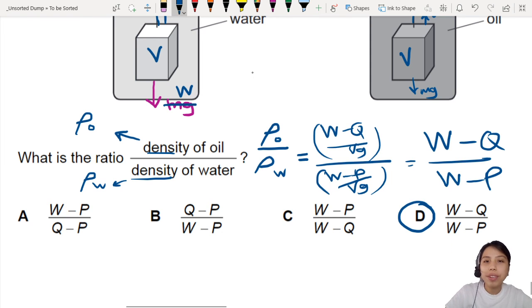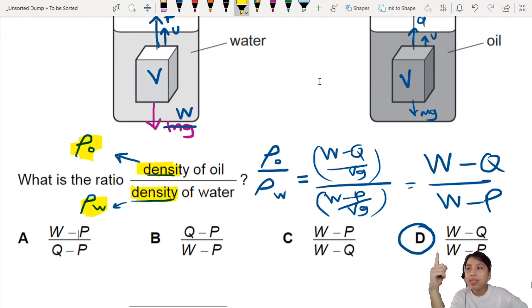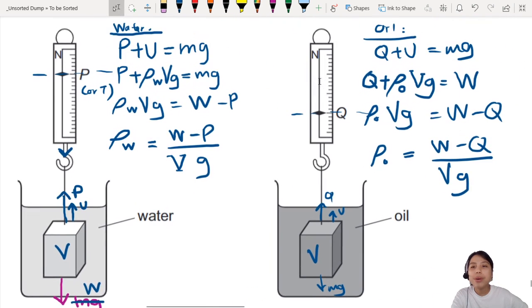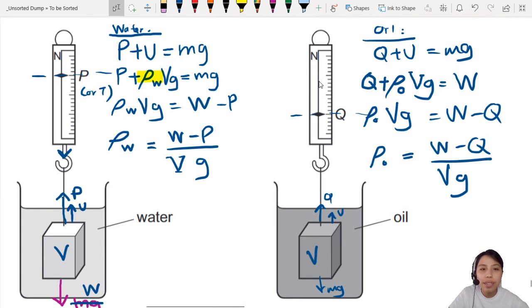We found the answer! Very good. So when you see ratios, stay calm. Find both separately, and then you divide them to find the ratio. That's one of the most straightforward ways. You're trying to find density, so you need to somehow get density involved in the equation. We come up with force equations, then we plug in everything we know about uptrust and things like that. That's for this question. I will see you in the next question, and we'll have more fun with Paper One MCQs.